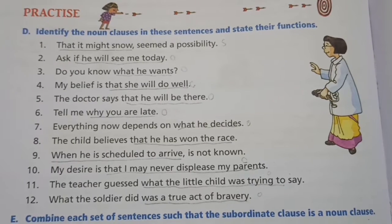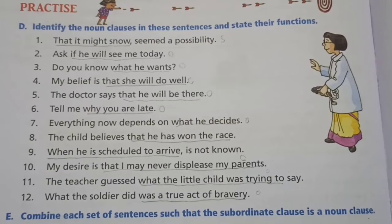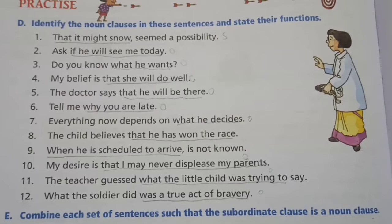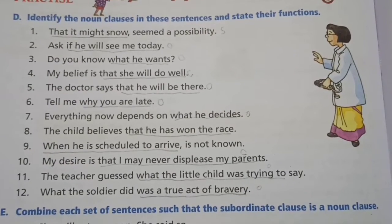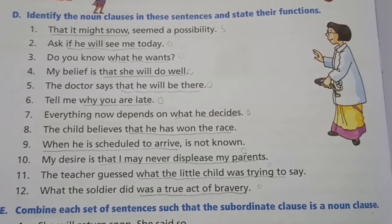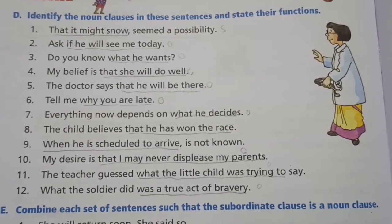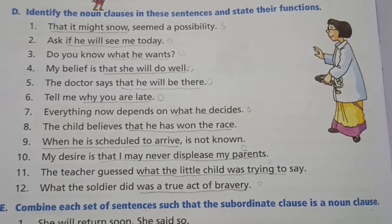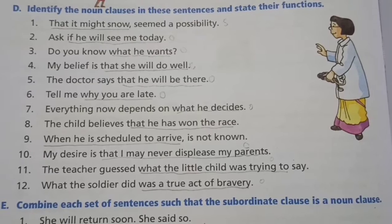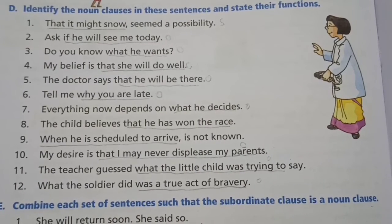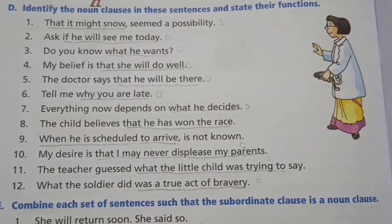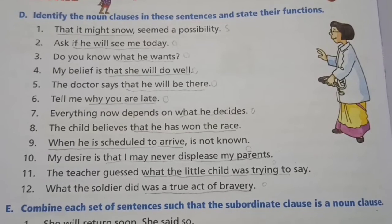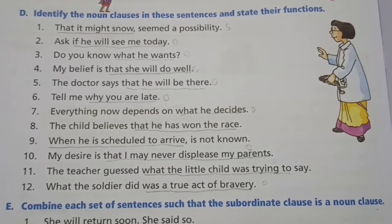Exercise D: Identify the noun clauses and state their function. First: 'that it might snow' is the noun clause and it is the subject. Second: 'if he will see me today' is the noun clause and it is the object. Third: 'what he wants' is the noun clause and it is the object. Fourth: 'that she will do well' is the noun clause and it is the complement.